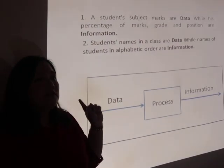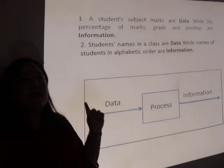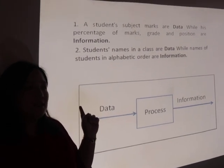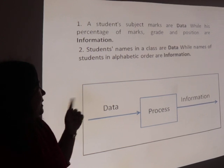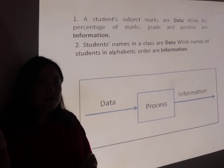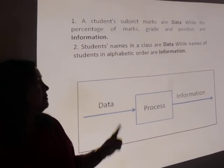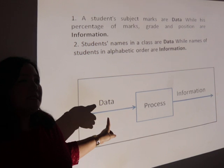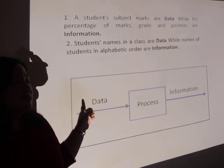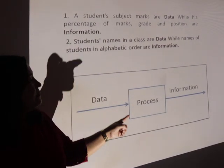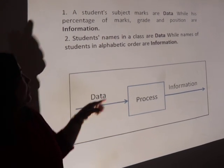Another example of data and information can be a school timetable. In that, the variables like number of periods, timings, and subjects are all data. When that data is processed and the final result — that is, the timetable — is produced, that timetable is the information.